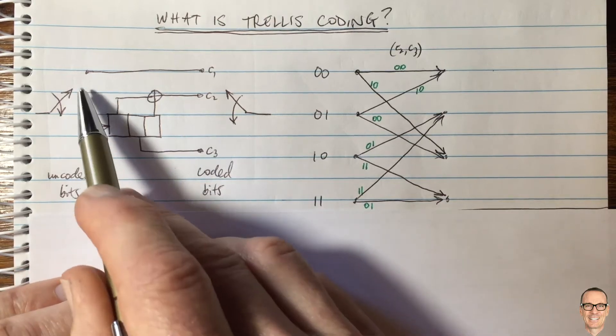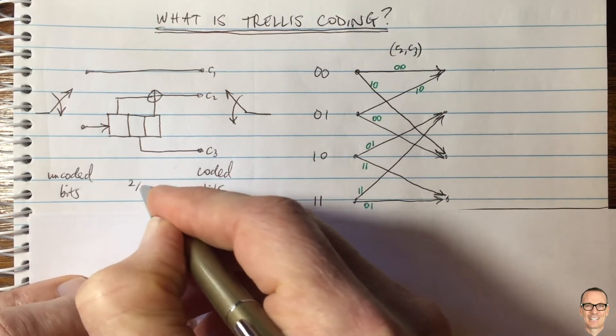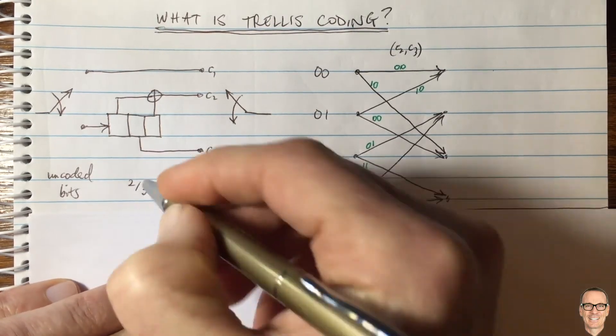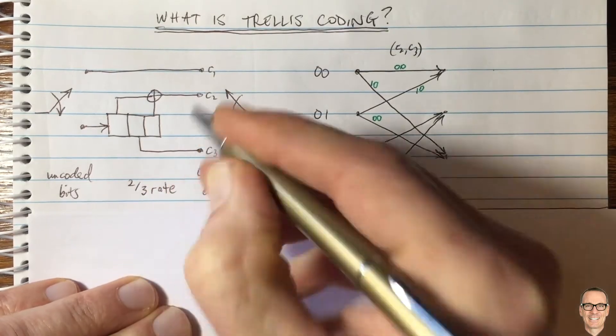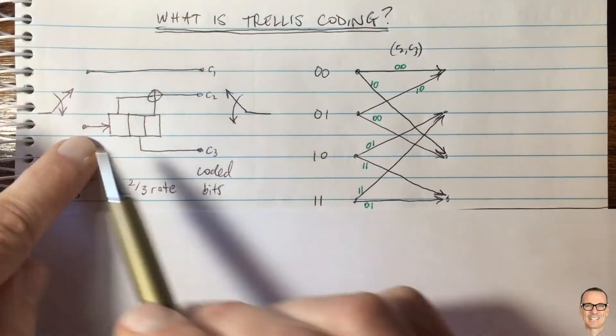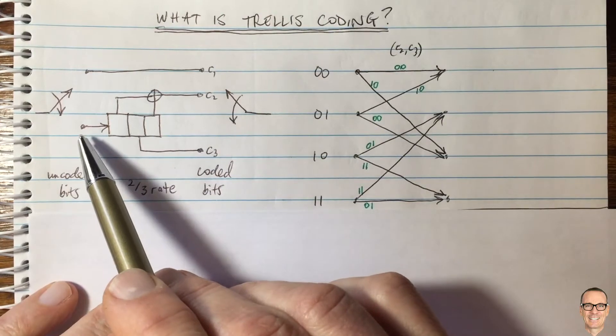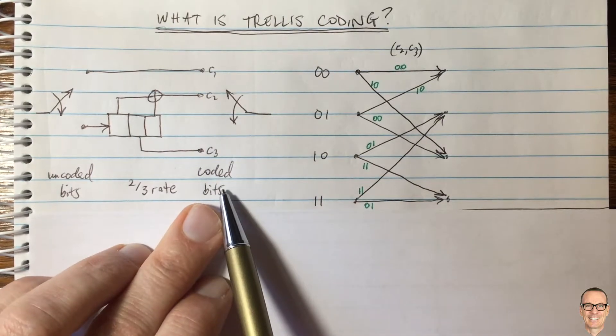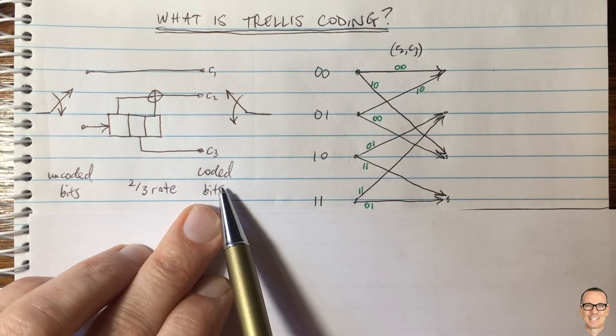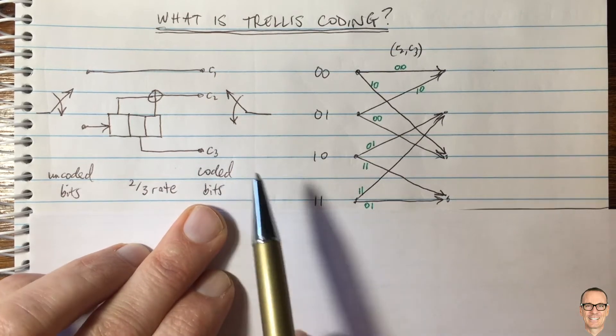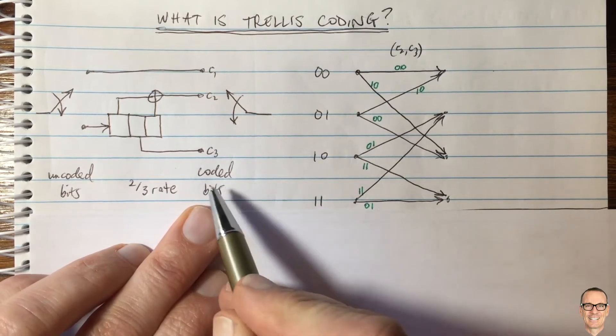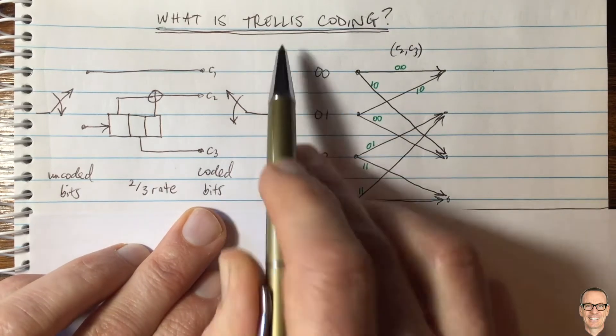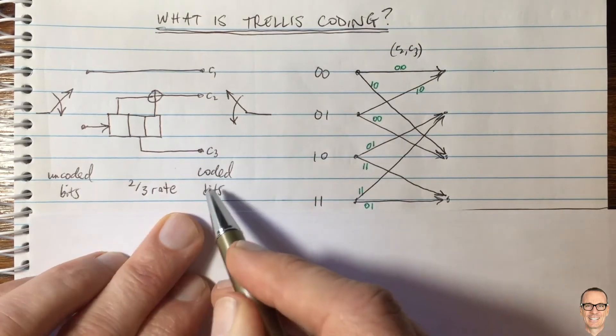So for example in this case, this is a two-third rate convolutional coder where without the coding you were sending two bits, you could have used four PSK, but with the coding you need to send three coded bits and you would send eight PSK. So let's look at what the trade-offs are and how you go about this in the trellis coding method.